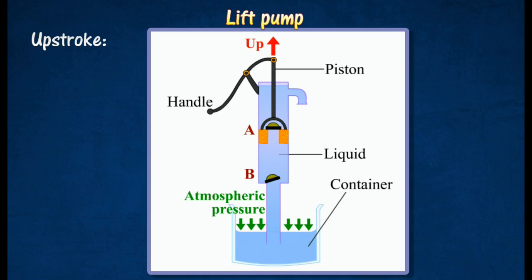During the upstroke, A closes and the pressure inside the barrel is reduced due to the increase in volume of the air inside it. This causes the liquid to be pushed into the barrel.